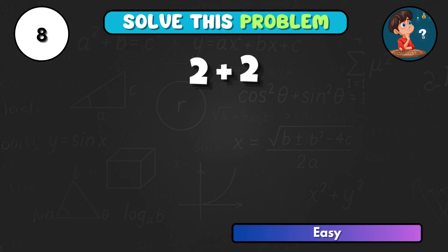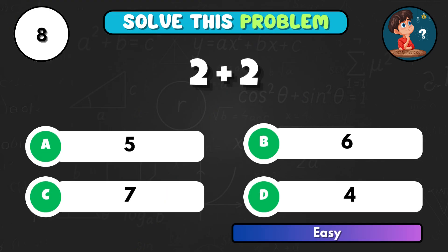2 added to 2 gives what number? Correct choice D, and that's 4.